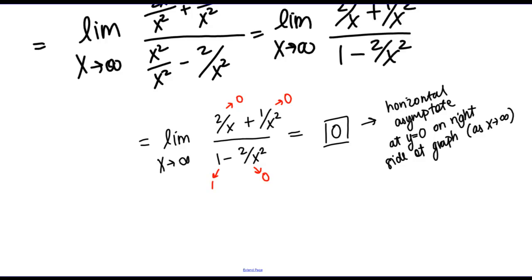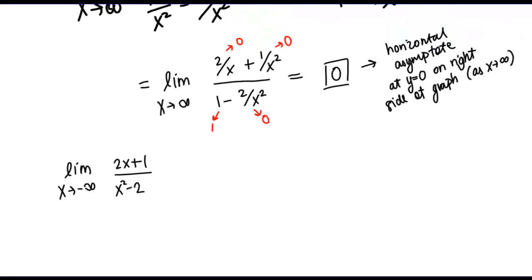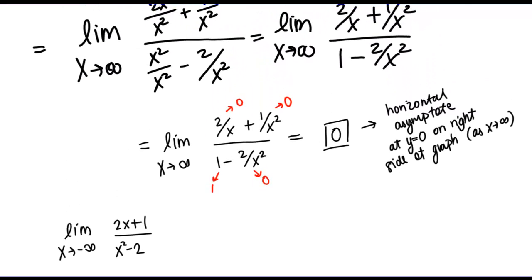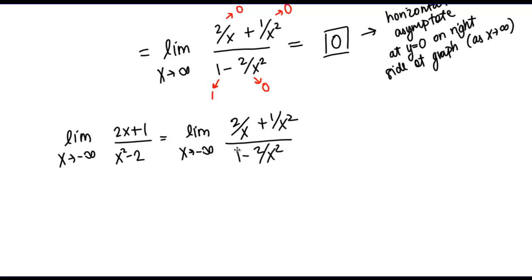Now let's also think about the limit as x goes to negative infinity. We've already done a lot of work for this limit, so we can go from the step where we already had things rewritten. This is going to equal the limit as x goes to negative infinity of 2 over x plus 1 over x squared, all over 1 minus 2 over x squared. We'll use the same thought process and think about what each term approaches as x goes to negative infinity. So 2 over x — as x goes to negative infinity, that denominator is getting larger and larger in the negative direction, so the term is still approaching 0.